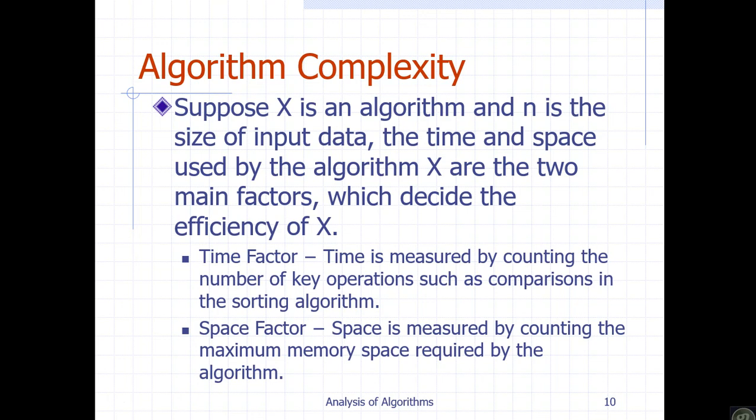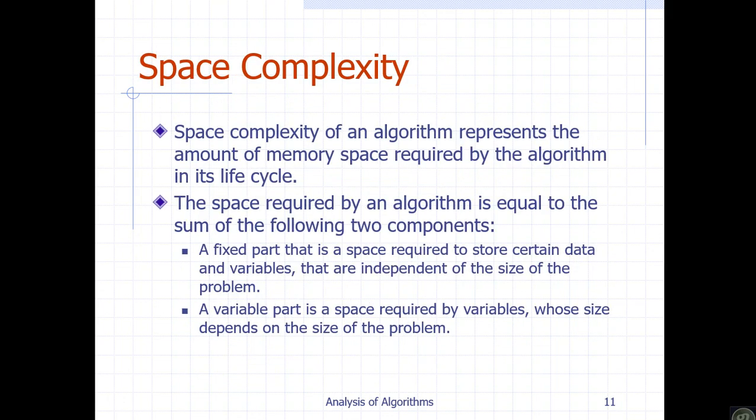One way of determining time is referred to as the time factor. Time is measured by counting operations. Space factor is determined by simply measuring the memory used. An algorithm takes input and generates output, and the maximum memory used during this process is measured by the space factor. Space complexity represents the memory an algorithm uses to process the input data of size n.